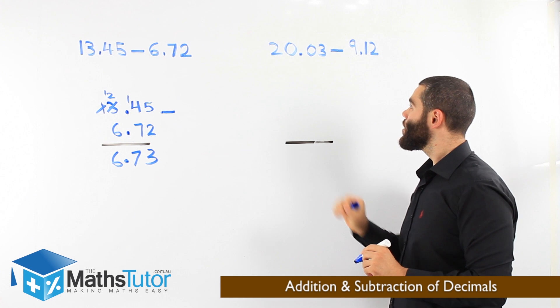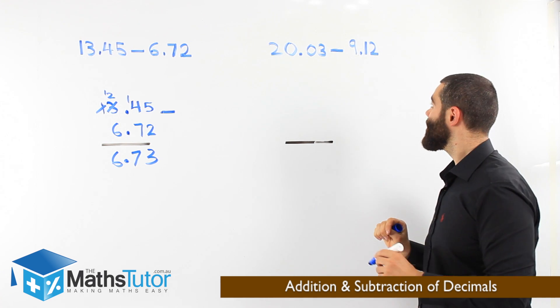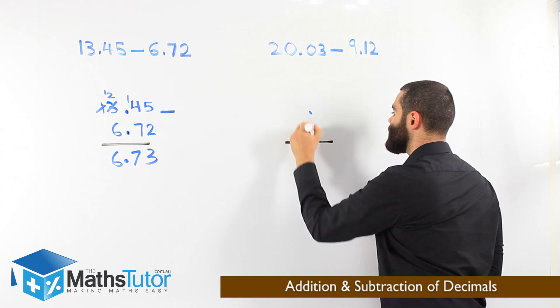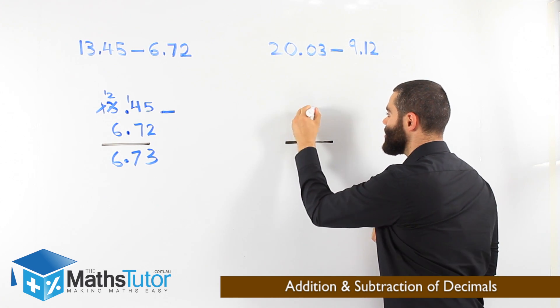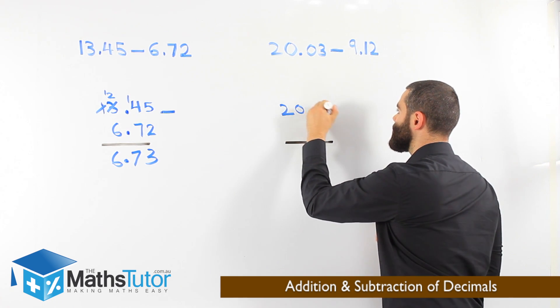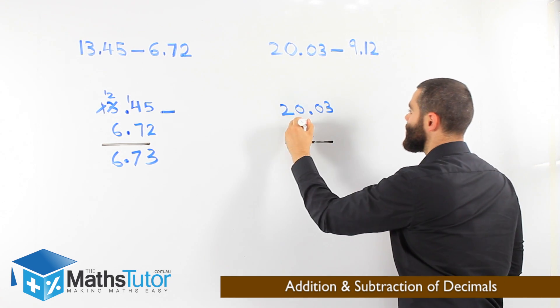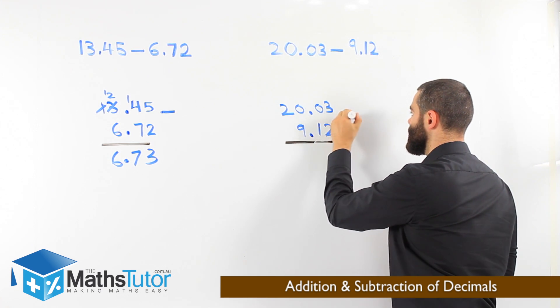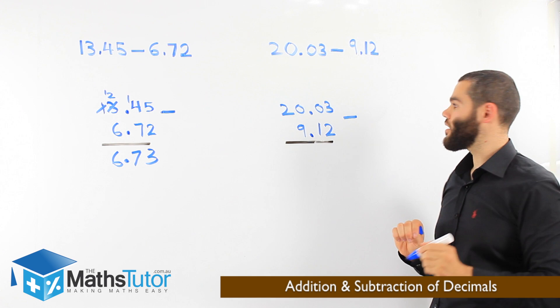Let us do this one here. 20.03 take away 9.12. Again, always point under point. Align them up. Now, this will be easy now to align everything else up. 9 and 1, 2 take away. Okay.